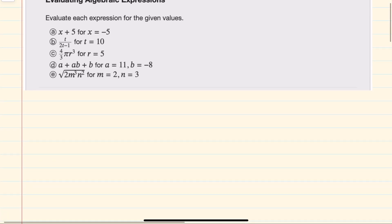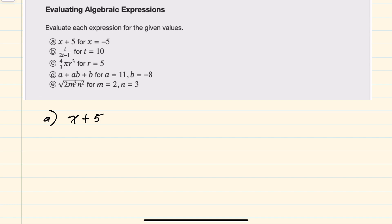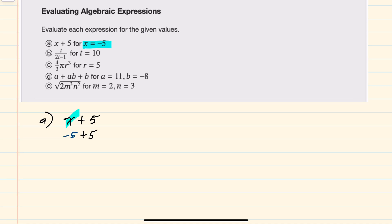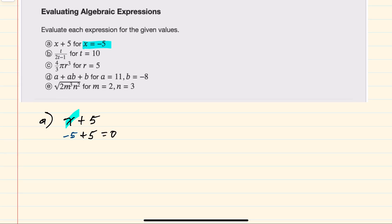Starting with a, we have x plus 5 where x equals negative 5. So replacing x with negative 5 gives us negative 5 plus 5, which is 0.